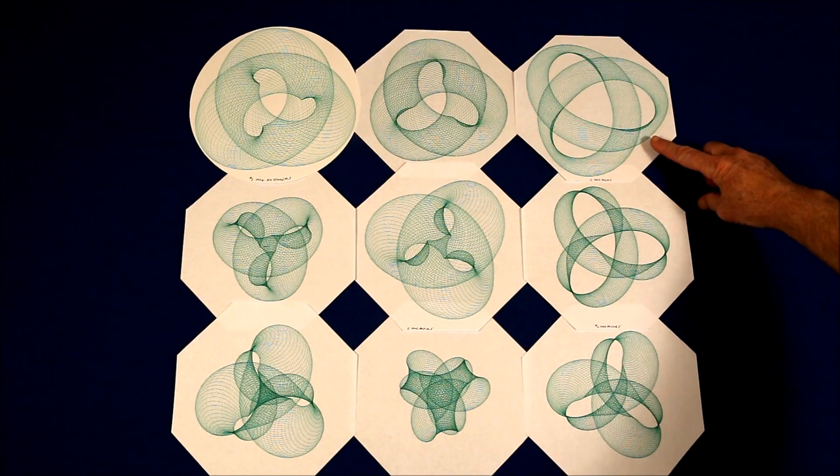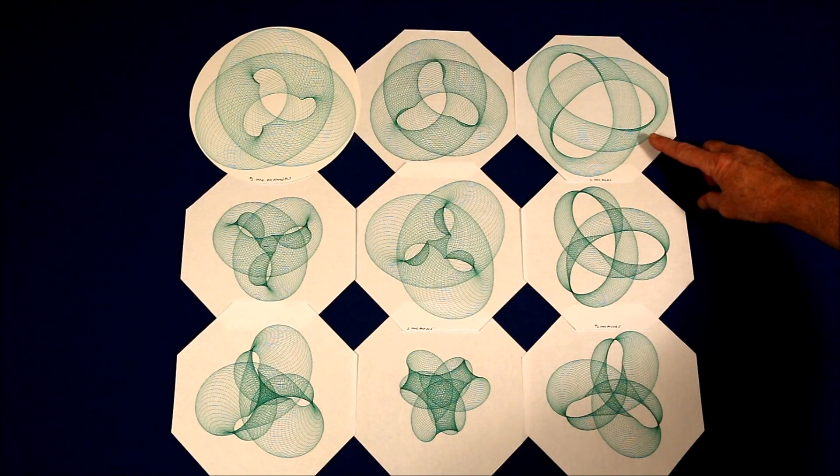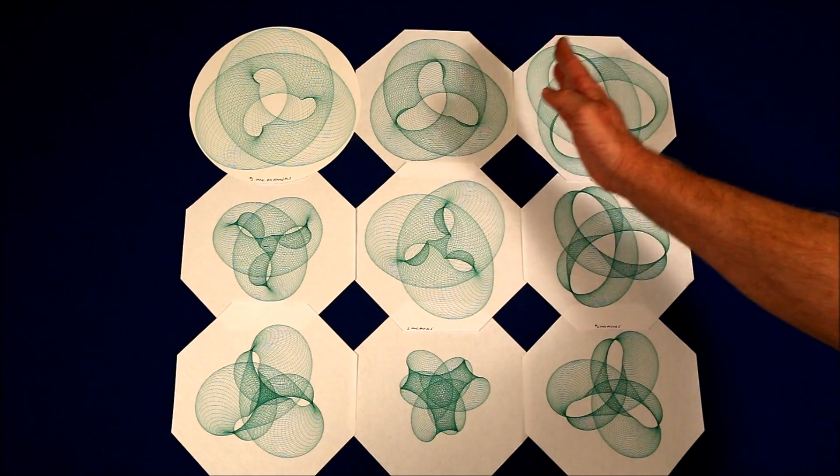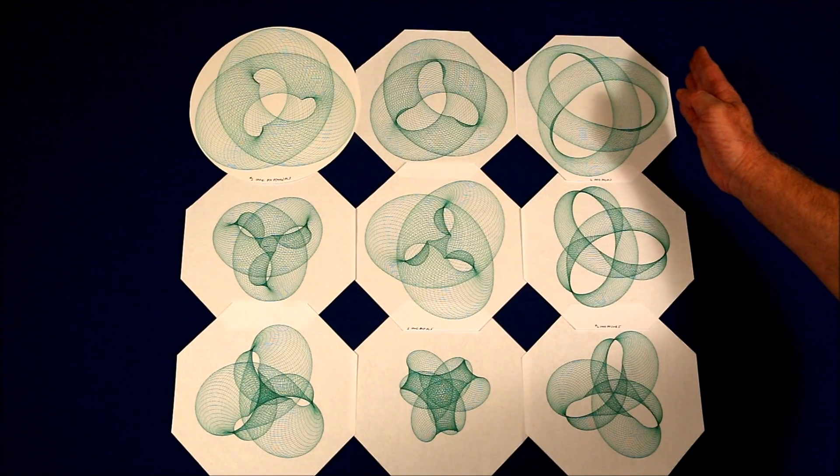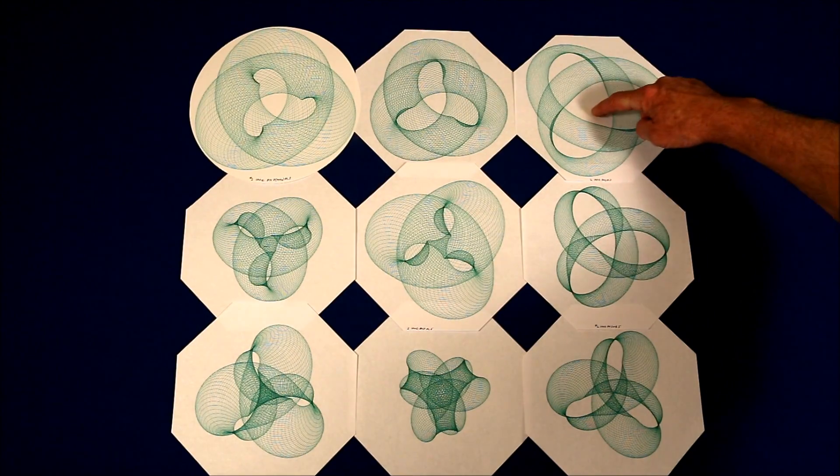Here's an example. I changed one gear so that instead of a five point figure, I had a three point figure. I began by positioning the pen as far on the pen holder to the right as it would go, and as far up as it would go. And I got this figure.